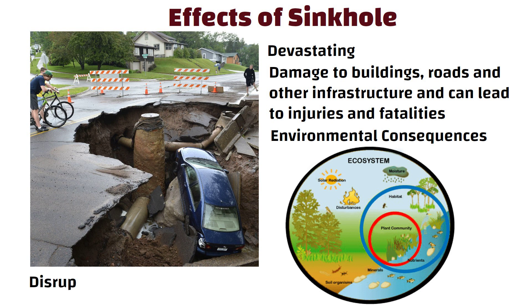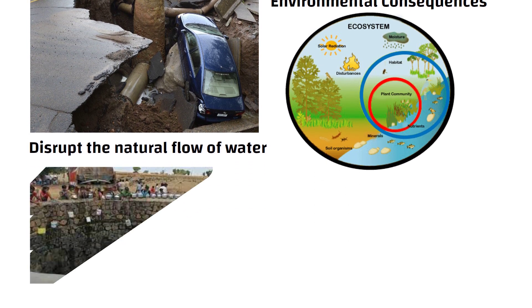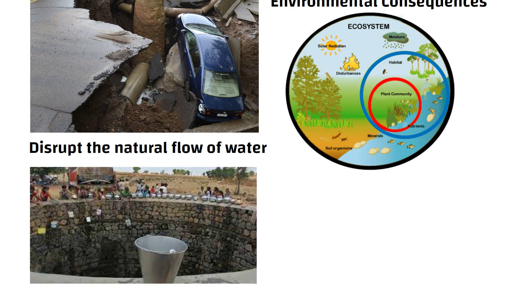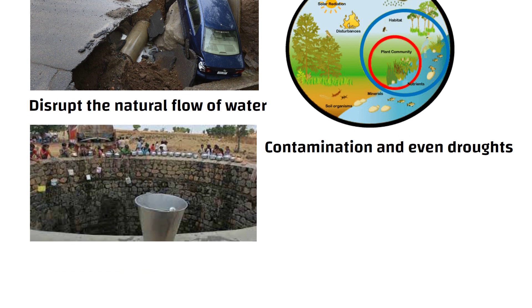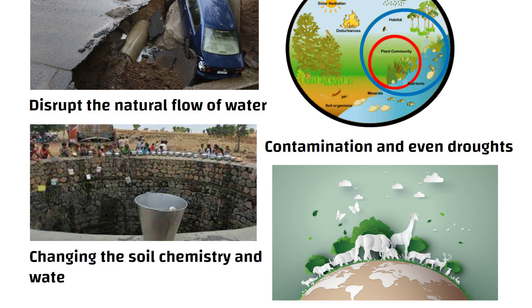Sinkholes can disrupt the natural flow of water, causing groundwater depletion, contamination, and even droughts. They can also affect plant and animal life by changing the soil chemistry and water availability.